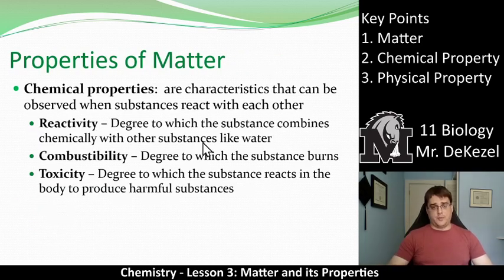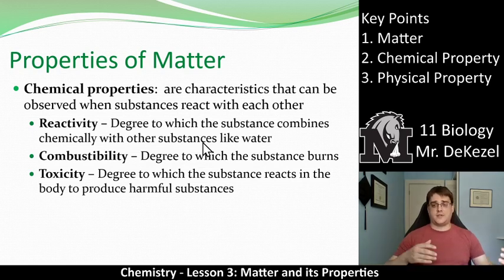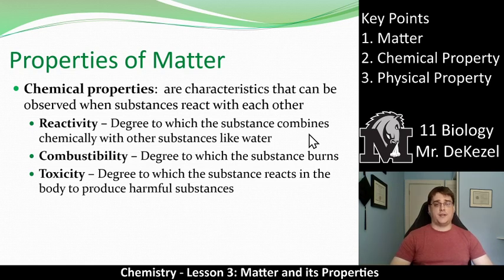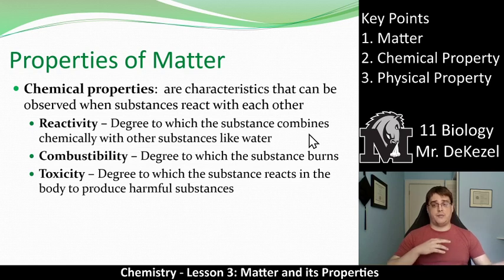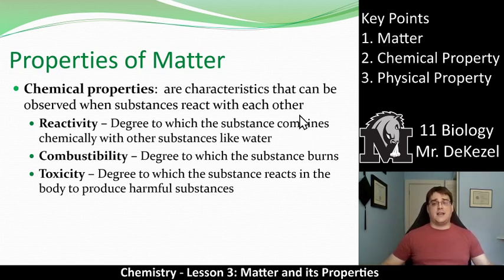Chemical properties are characteristics that are observed when we react substances together. Reactivity is the degree to which substances combine chemically with other substances, like water — if something reacts with water, it is chemically reactive. Combustibility refers to whether a substance burns — that is a chemical property, whether it is flammable or not. Toxicity is the degree to which a substance reacts in the body to produce harmful effects. These reactions — in the body, in the air, or whether it burns — are all chemical properties.